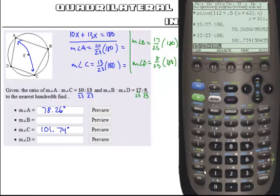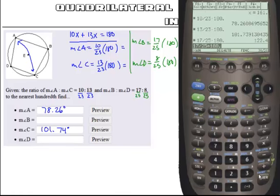And so when I calculate this, 17 out of 25 times 180 gives me 122.4.